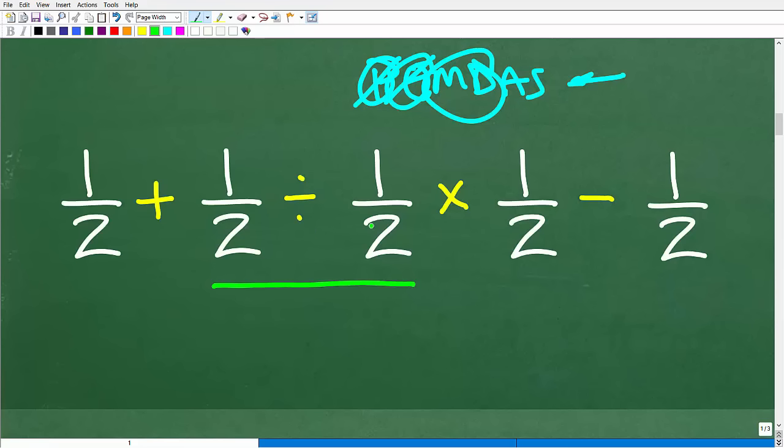All right, now we have 1 half divided by 1 half. Now, even if you don't know how to divide fractions, what is anything divided by itself? Okay, if you have 10 and you divide it by 10, what is the answer? It's 1. Now, 10 divided by 10, I could write this way too. 10 divided by 10, the answer is 1.